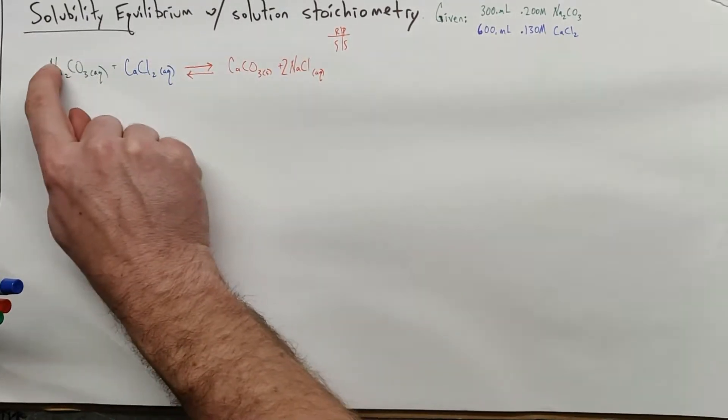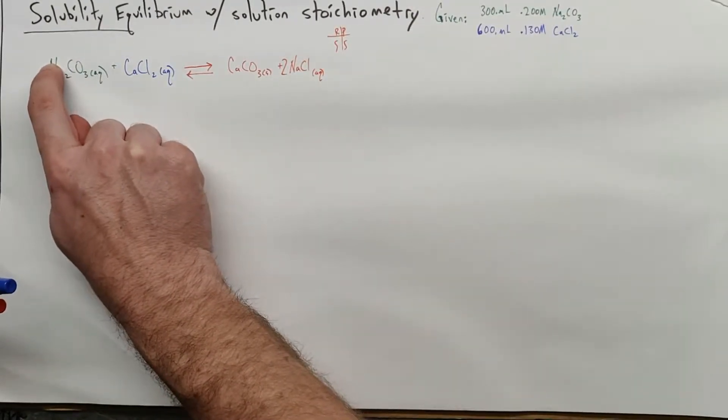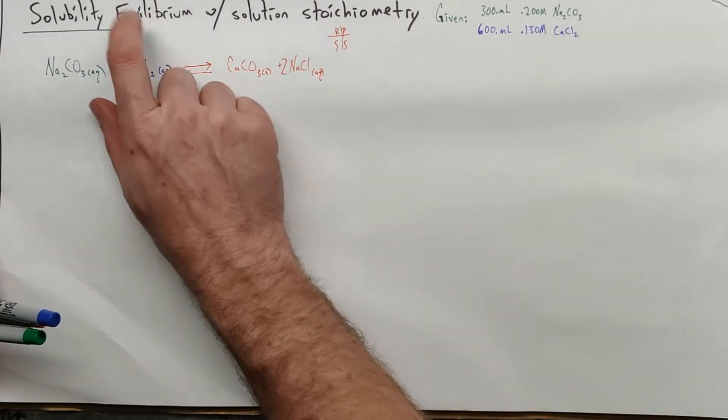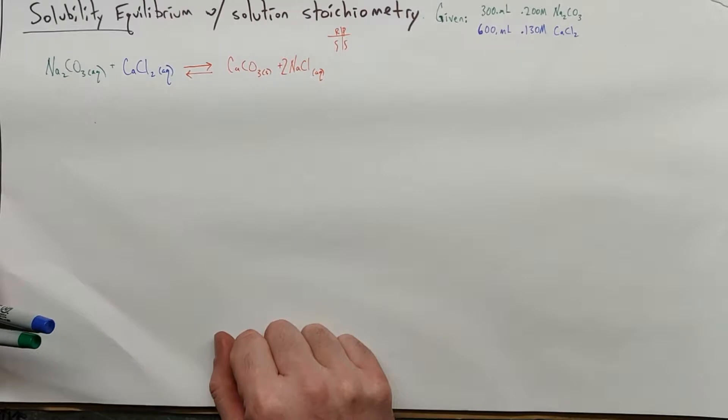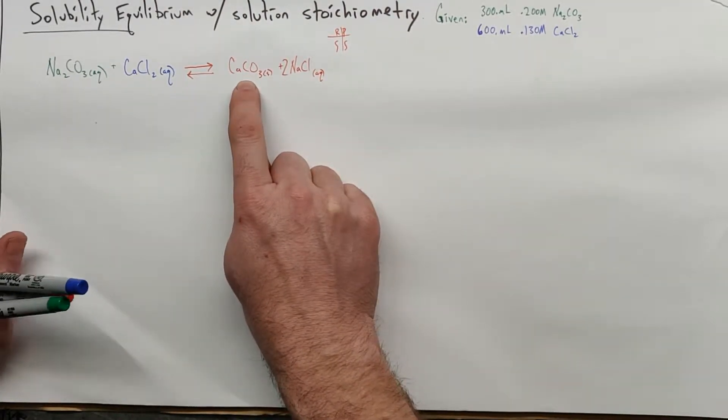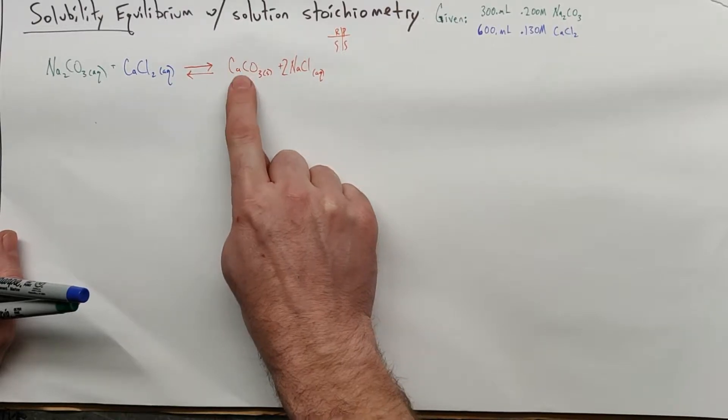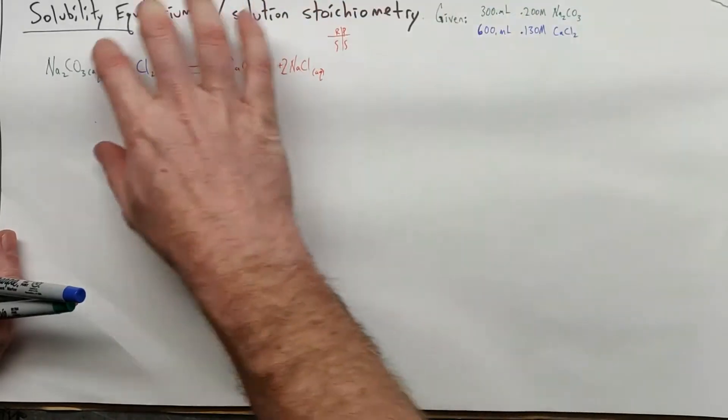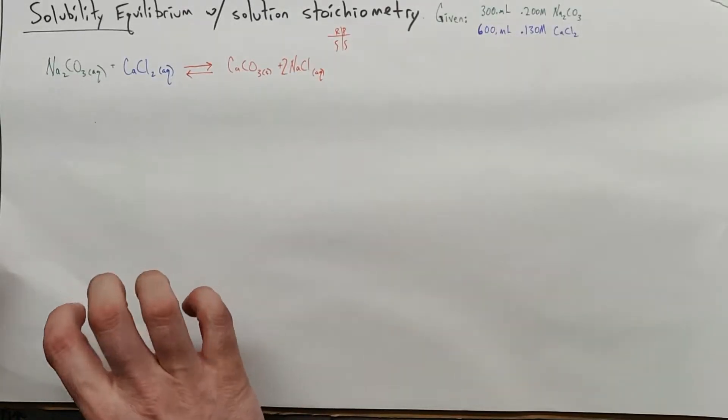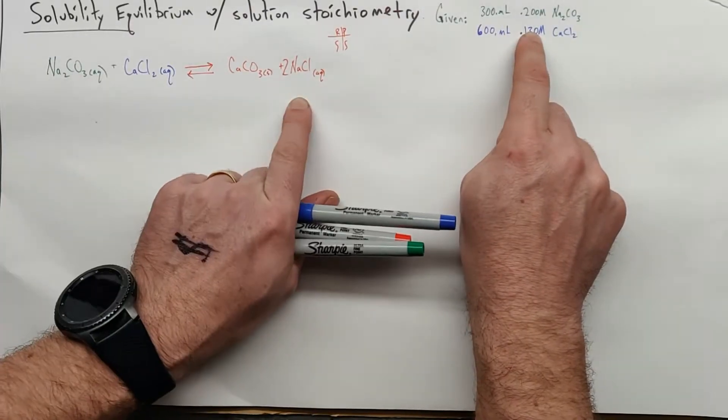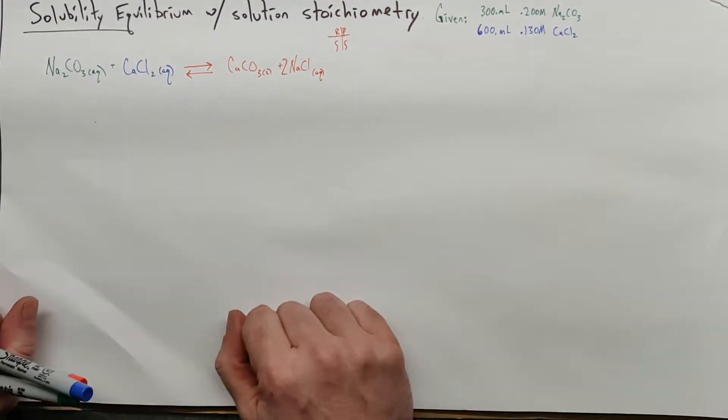In straight up double replacement reactions, this is a solid and we say it precipitates out. Now we know there's no such thing as zero in an equilibrium system, and it can't be true that there are no calcium ions and no carbonate ions from this. So what we're going to do in this problem is take this information, do stoichiometry, and then fix it with an equilibrium system. So once again in slow-mo, do stoichiometry, assume everything goes this way, and then fix it with equilibrium later.